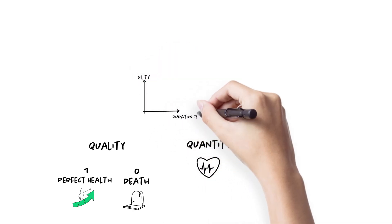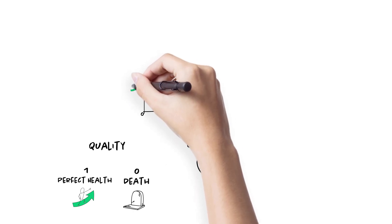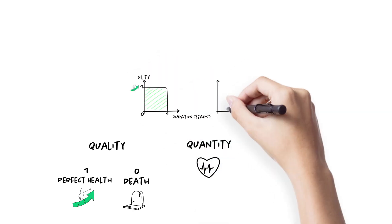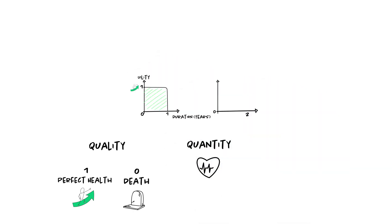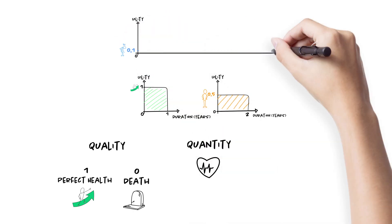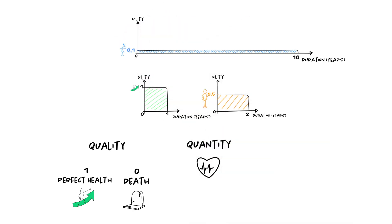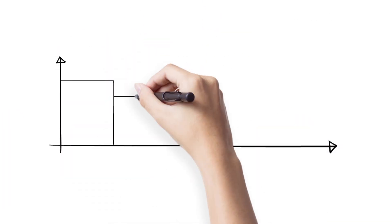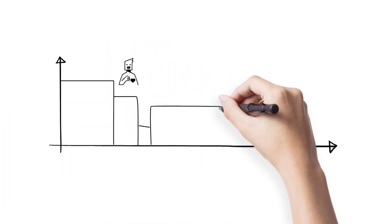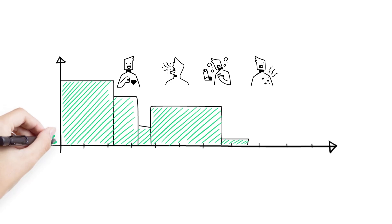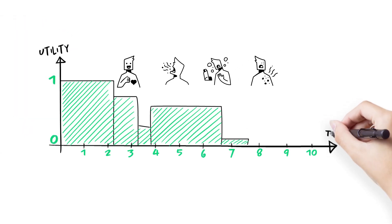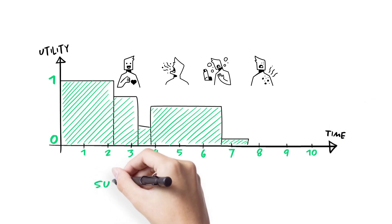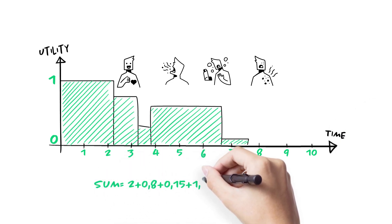One QALY can mean one year in perfect health, two years in a state valued 0.5, or 10 years in a state valued 0.1. In reality, patients experience different health states over time, so we usually consider patient profiles with sequences of utility values reported over periods of time.